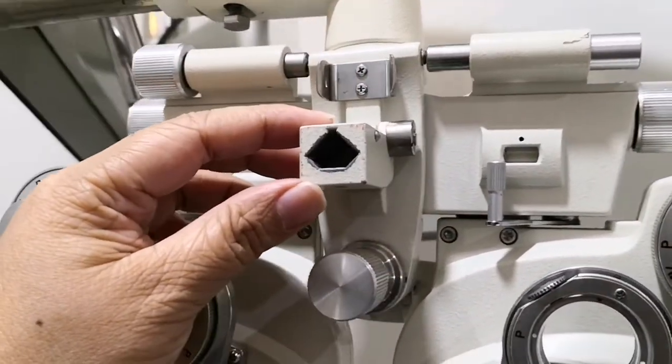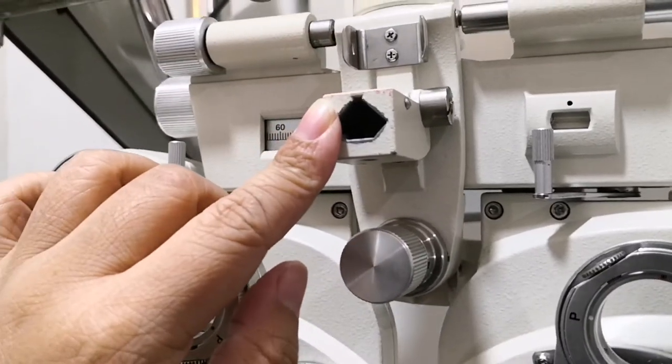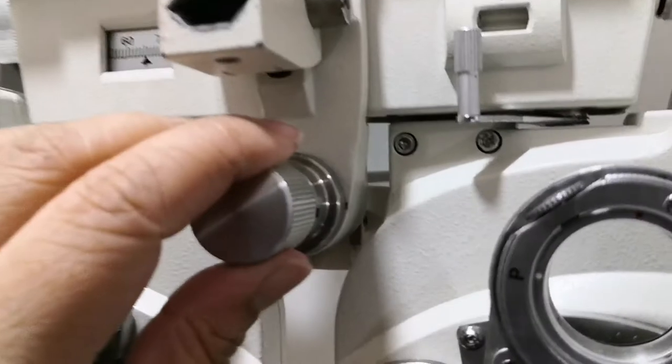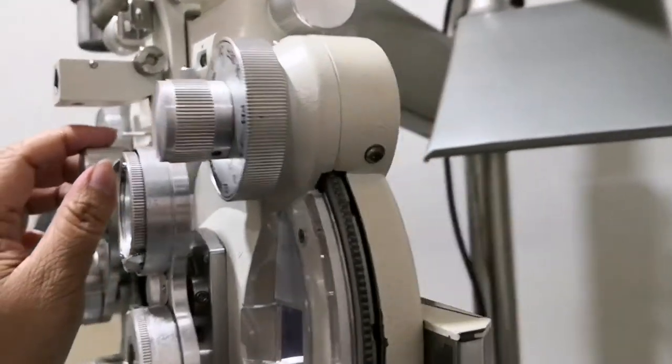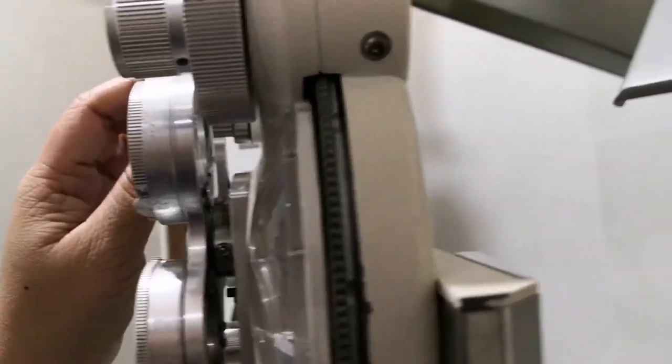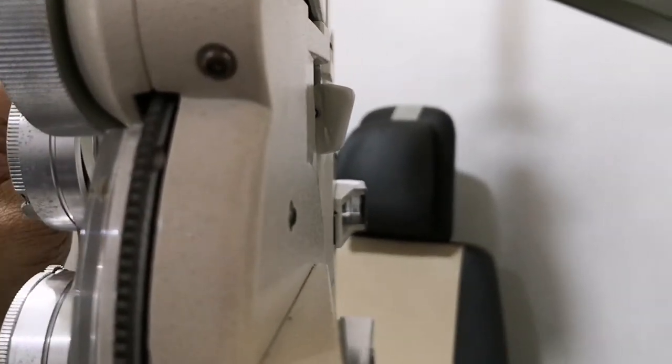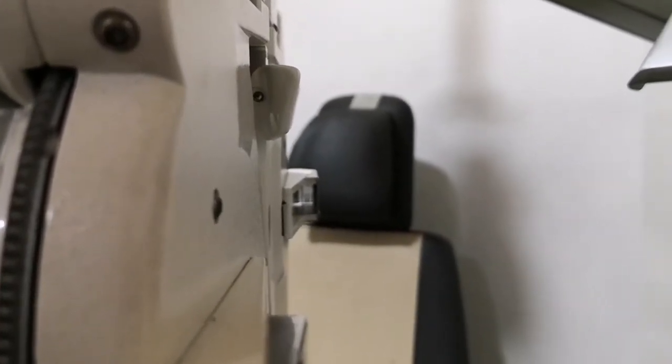This is the reading rod holder. And we also have the adjustment for the forehead rest. If you need to move it forward, you just have to rotate it. And if you want to move it backward, just rotate the knob.